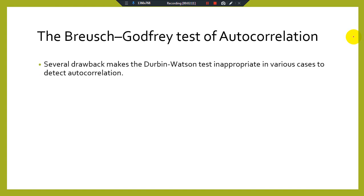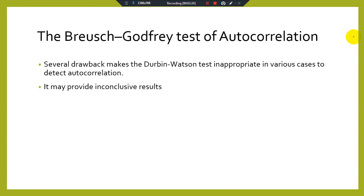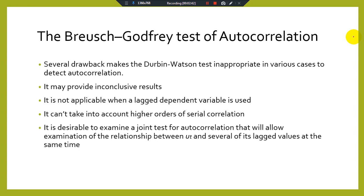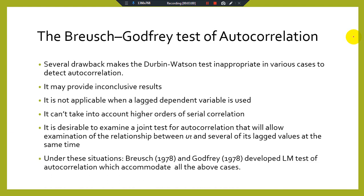There are several drawbacks that make the Durbin-Watson test inappropriate in various cases. It may provide inconclusive results, it is not applicable when a lagged dependent variable is used, and it cannot take into account higher-order serial correlation. Under these situations, Breusch (1978) and Godfrey (1978) developed the LM test of autocorrelation, which accommodates all these cases.